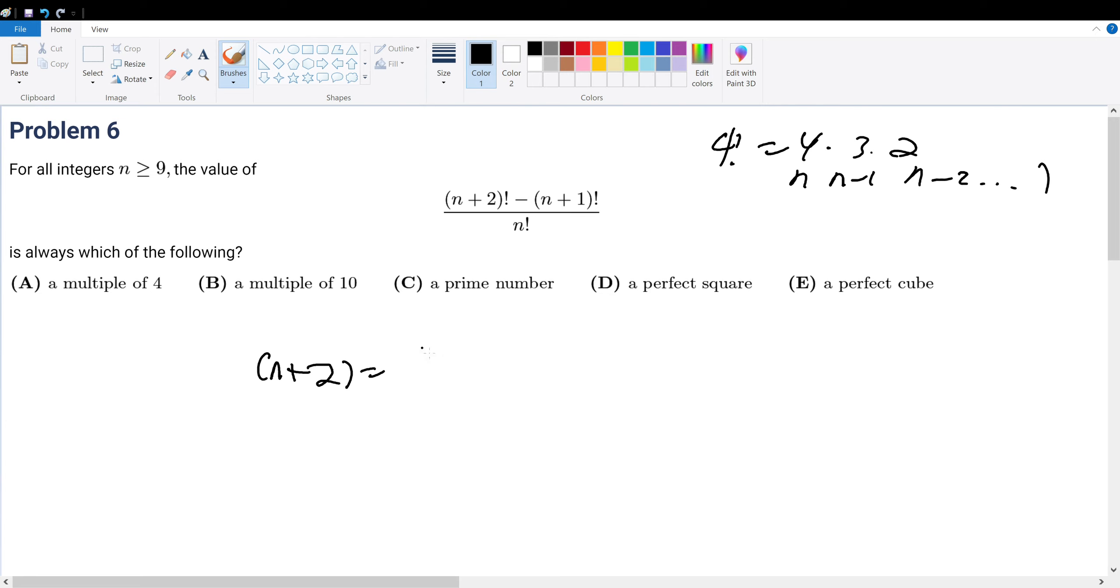So this is equal to n plus 2 factorial equals n plus 2 times n plus 1 factorial. And then we know n plus 1 factorial can be left the same because we factor out the n plus 1 factorial.